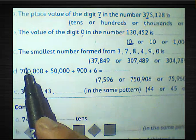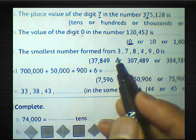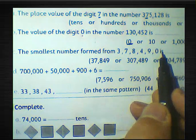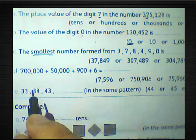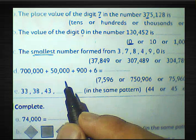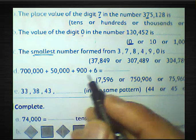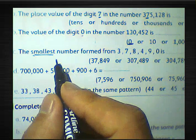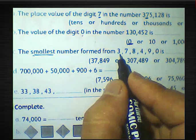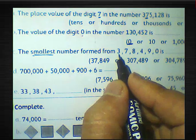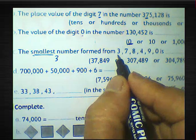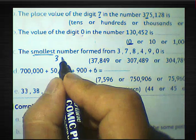The smallest number formed from the digits 3, 7, 8, 4, 9, 0 is — we want to write the smallest number. We must write from left to right. First, we must write the least digit without 0, because we don't write 0 on the left-hand side — it would be cancelled. So the least digit is 3, and we write 0 behind it.